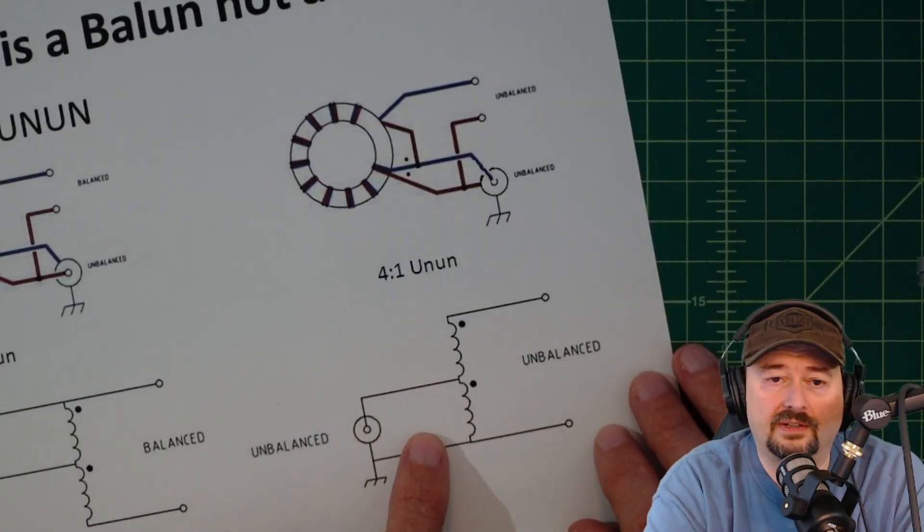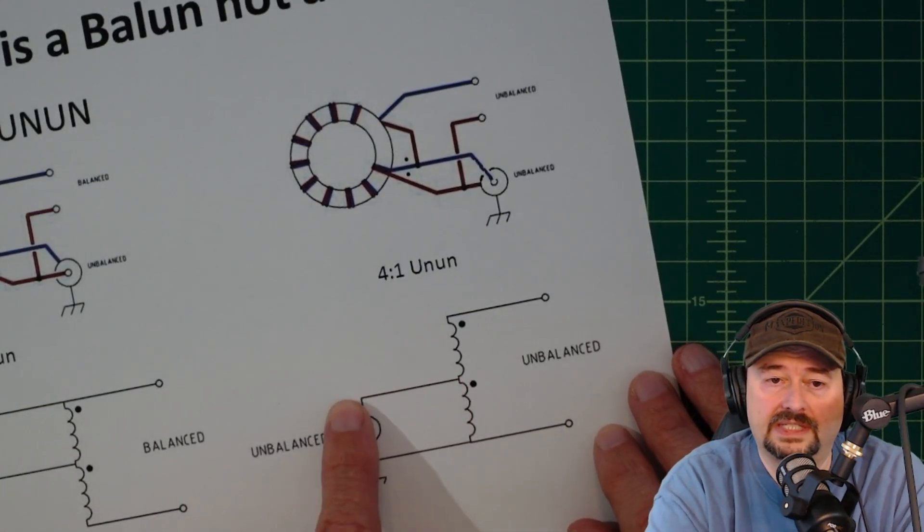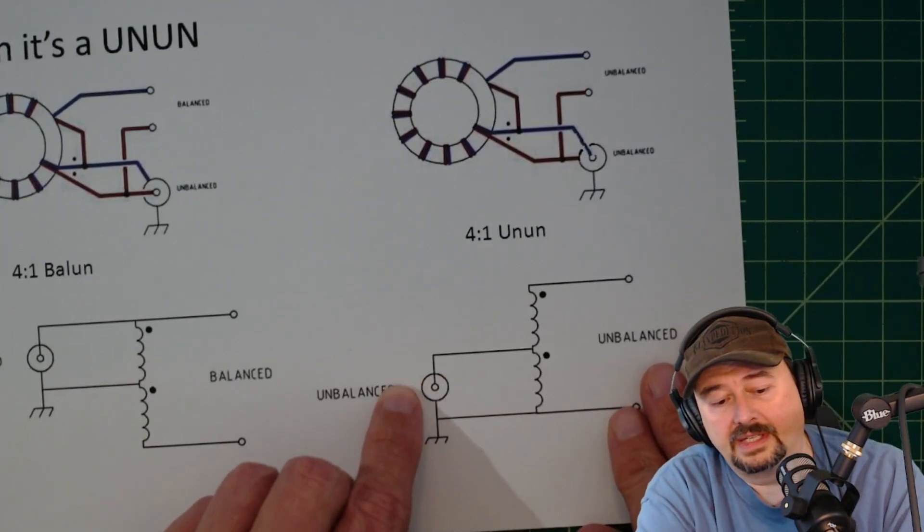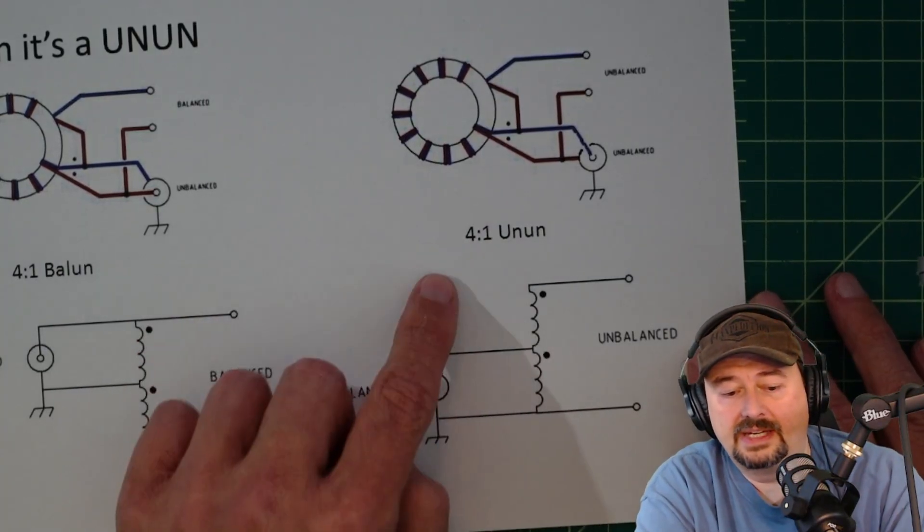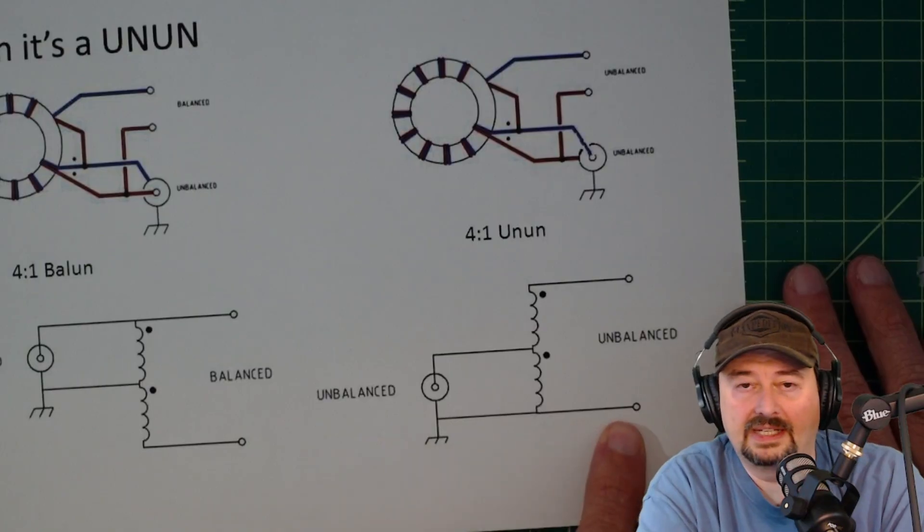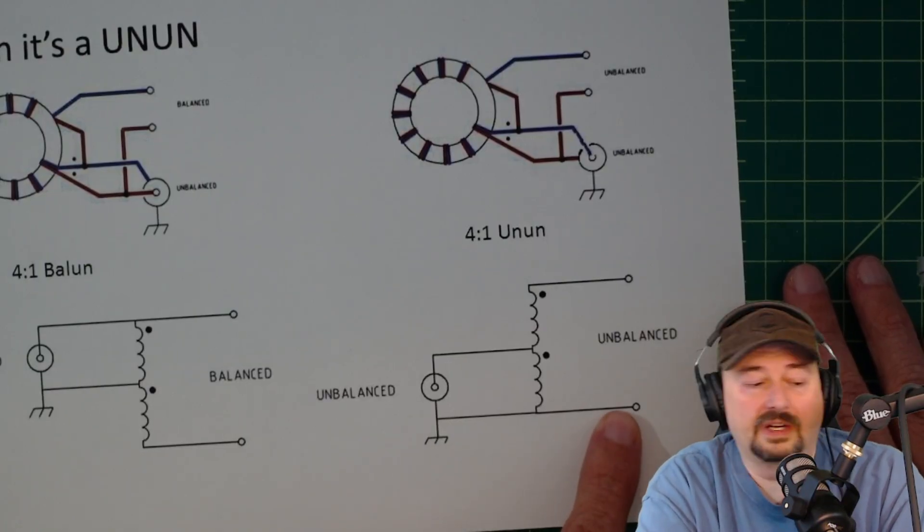When we take a look at this schematic, you can see the center tap of our inductor is connected down here to the center conductor of our coaxial cable.